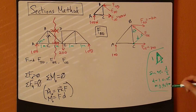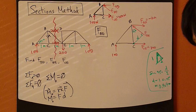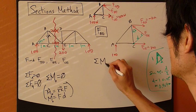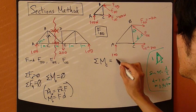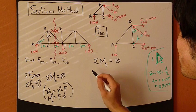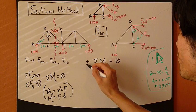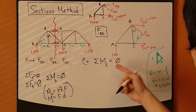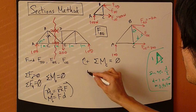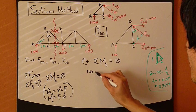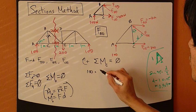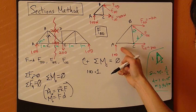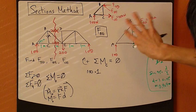Sum of moments about joint C equals 0. I'm just going to make the clockwise direction positive. First, this 100 times the distance, which will be 1 meter. That's my first moment, it's positive, clockwise.